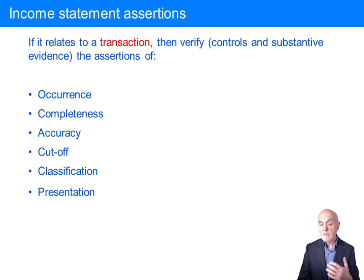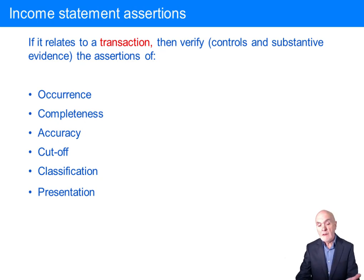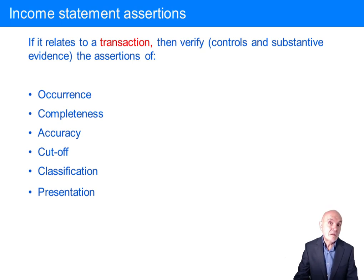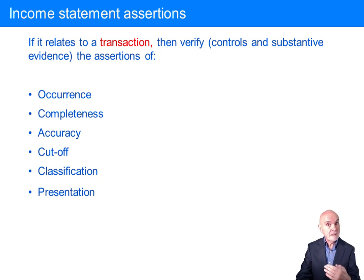Classification — that expenses are in the right slots. And presentation — for example, that we are properly presenting directors' emoluments. Presentation can be thought of as disclosures, because we are auditing disclosures made in the notes to the financial statements.